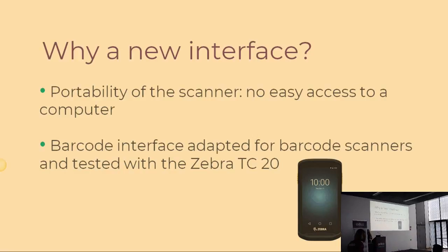Most of the time, you will just go to the warehouse and take your barcode scanner or your mobile with you. You want to be able to pick all the products, scan them in the warehouse, and move to the next one. That's why we improved the interface so that you can now easily work directly on your barcode scanners or on your mobile. The barcode scanner we tested the new interface with is the Zebra TC20, which you can see on this slide.